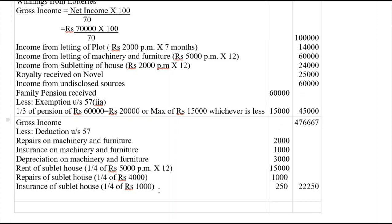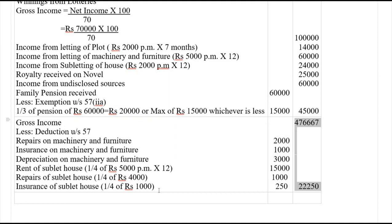Income from other sources = Rs. 4,76,667 − Rs. 22,250 = Rs. 4,54,417.